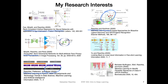Another student of mine is working on few-shot learning, which is a branch of deep learning concerned with learning from small datasets — most commonly using meta-learning or transfer learning. We won't be covering few-shot learning in this course, though I may ask my student to give a small guest lecture. He is also our TA this semester, so if you're interested you can ask him more about few-shot learning during office hours — he's always excited to talk about it.